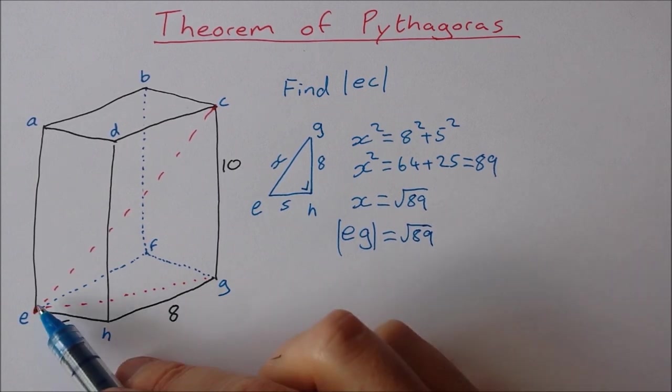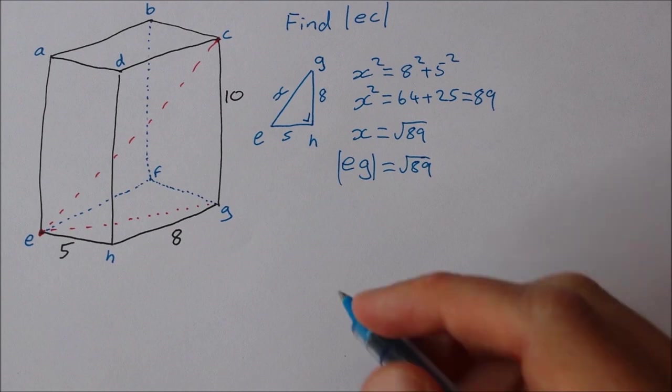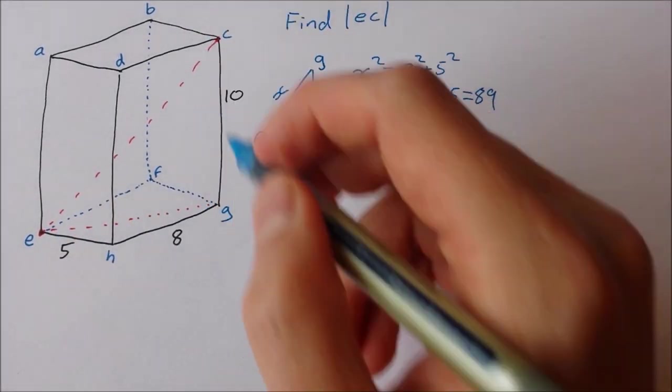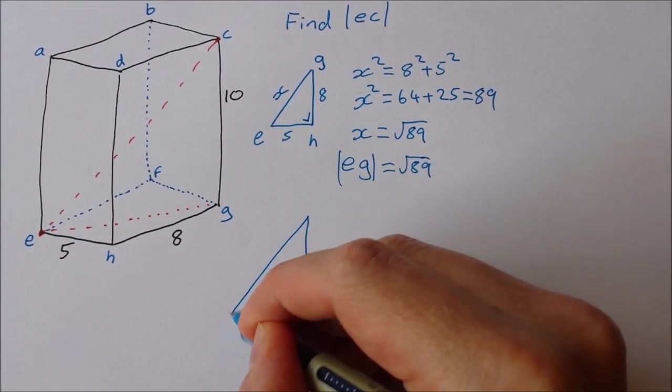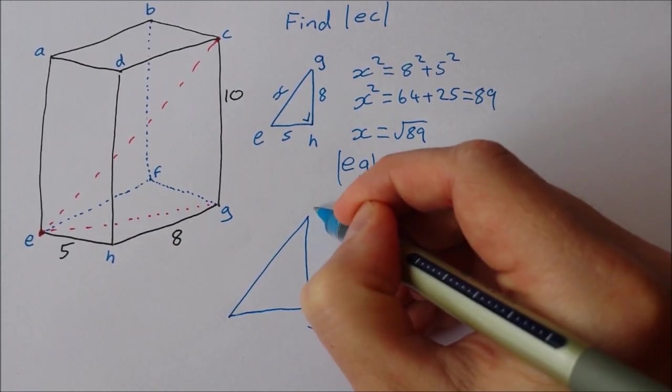Now I can use this to find my length EC. So I'll draw this triangle here now. Okay, so this is GCE.